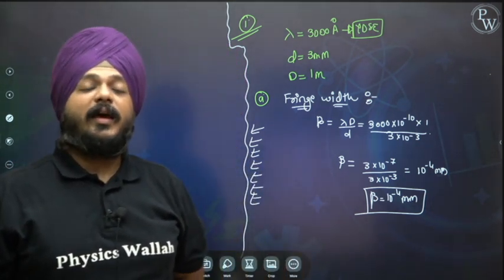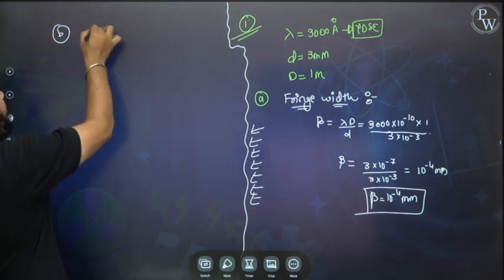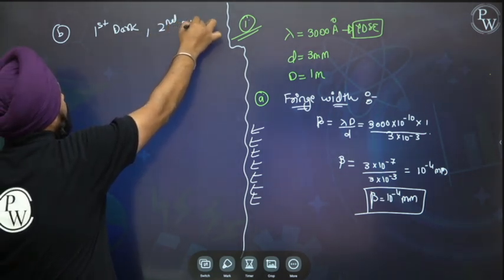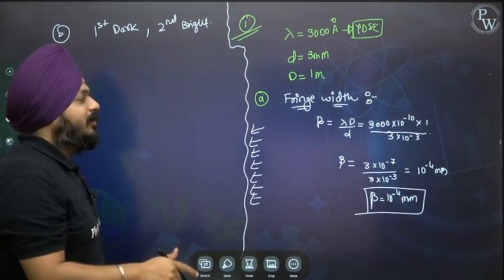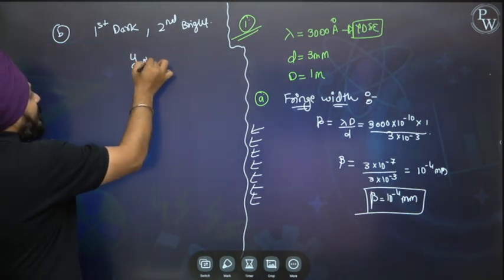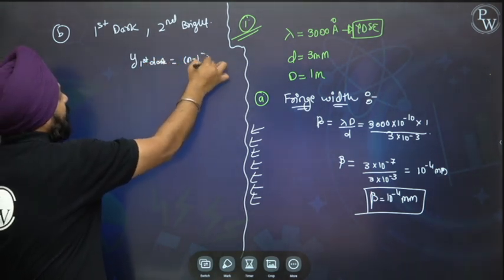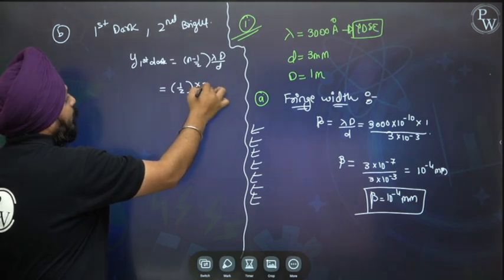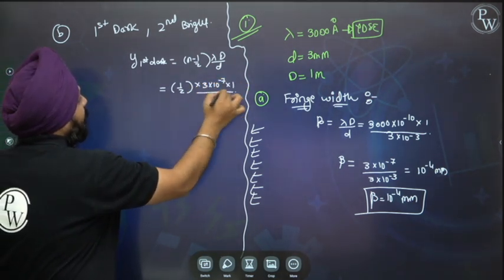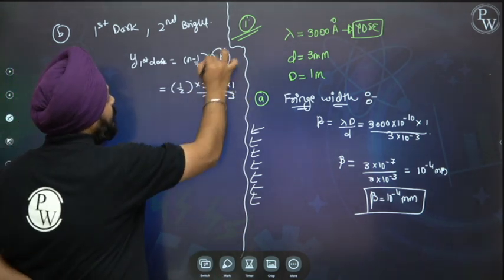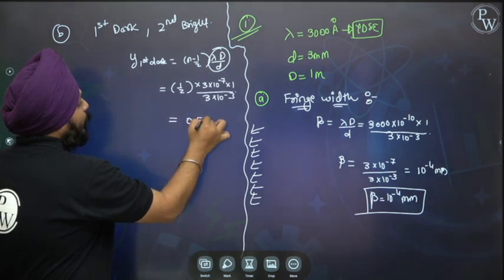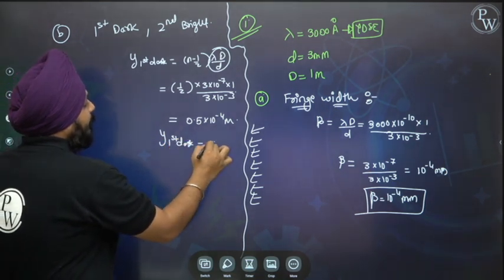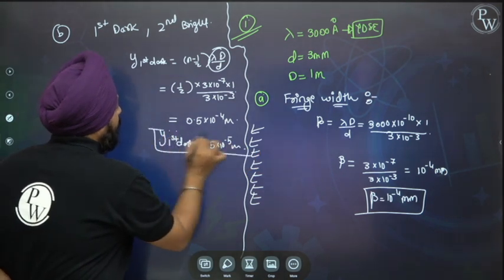Second: calculate the location of the first dark fringe. Location of first dark = (n - 1/2)×lambda×D/d. With n = 1: (1/2)×(3×10^-7)×1 / (3×10^-3) = 0.5×10^-4 m = 5×10^-5 m. This is the location of the first dark fringe.